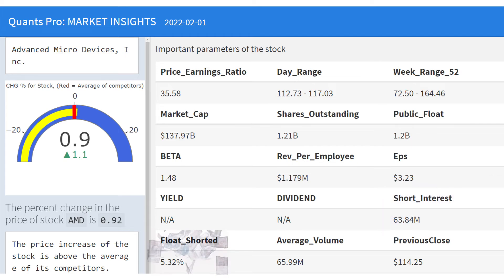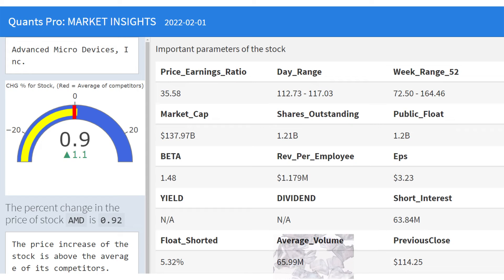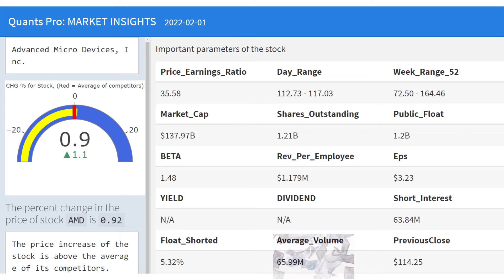Float shortage is the percentage of a company's stock that has been shorted by institutional traders compared to the number of shares available to the public. Average trading volume and previous closing price are shown in the table. Average volume is the average number of shares traded within a day. It is especially useful when evaluated together with other indicators, as serious increases and decreases in average trading volume make sense of other indicator signals. Higher average daily trading volume generally means the security is more competitive, has narrower spreads, and is typically less volatile.